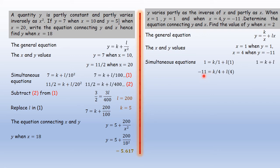When y is -11 and x is 4, replacing it we have -11 = k/4 + l(4). That simplifies to -11 = k/4 + 4l.